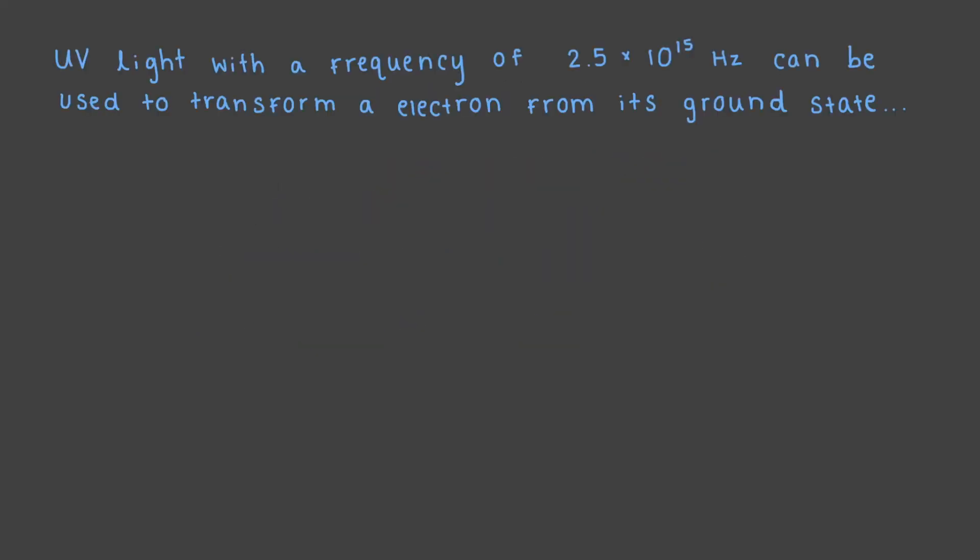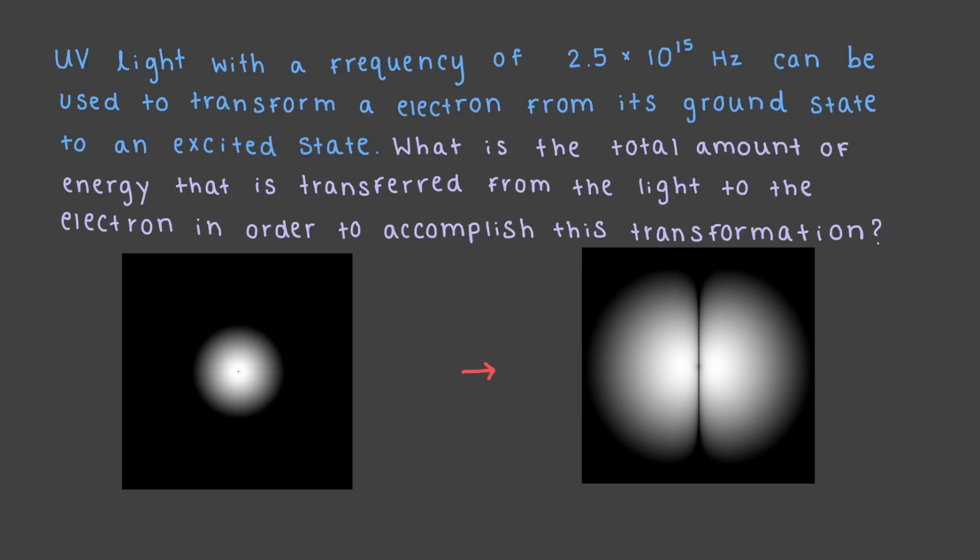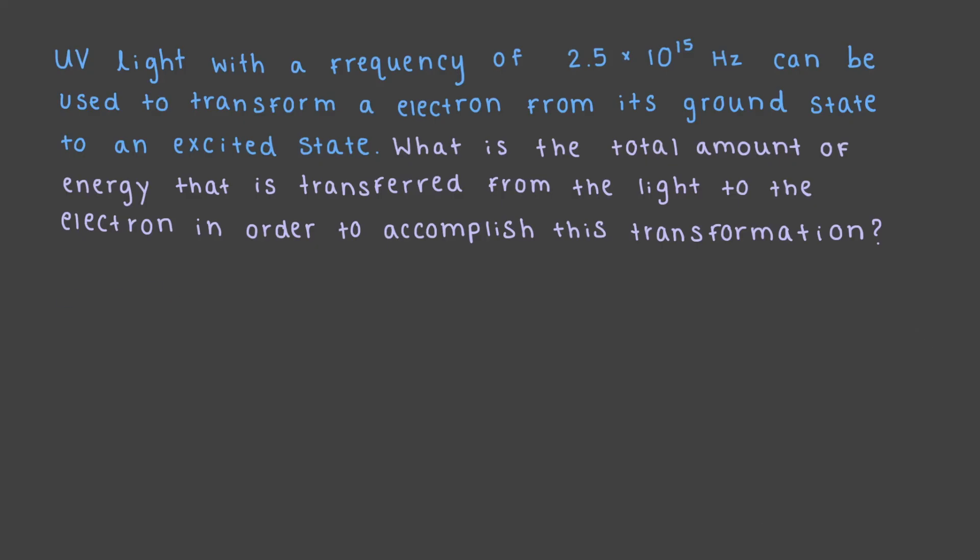UV light with a frequency of 2.5 times 10 to the 15 hertz can be used to transform an electron from its ground state to an excited state. What is the total amount of energy that is transferred from the light to the electron in order to accomplish this transformation? Recall that the formula for photon energy is E is equal to H nu. The UV light has a frequency of 2.5 times 10 to the 15 hertz. By plugging in this frequency and Planck's constant into the equation and cancelling out our units, we end up with an answer of 1.7 times 10 to the negative 18 joules.